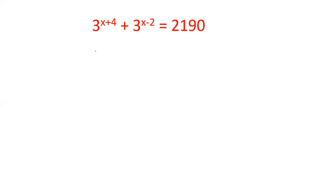So let's start. 3 power x plus 4 can be written as 3 power x into 3 power 4 because a power m plus n can be written as a power m into a power n. Similarly, a power m minus n can be written as a power m divided by a power n. So this can be written as 3 power x into 3 power 4 plus 3 power x divided by 3 power 2.